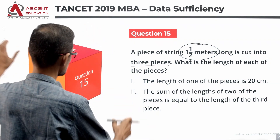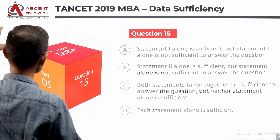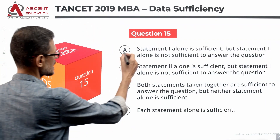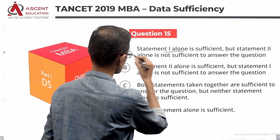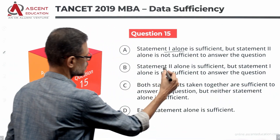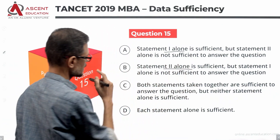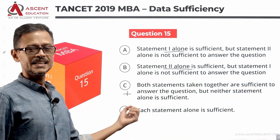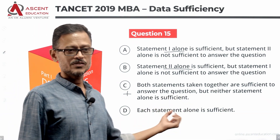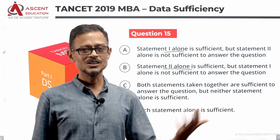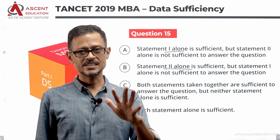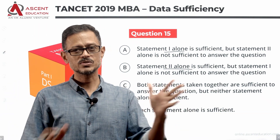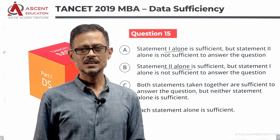Let's take a look at the four answer options before looking at the statements. Statement one alone is sufficient is A. Two alone is sufficient is B. Together they are sufficient is C. Each statement alone is sufficient is D.